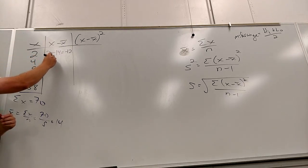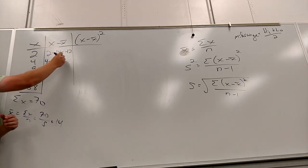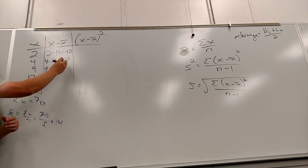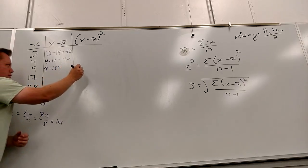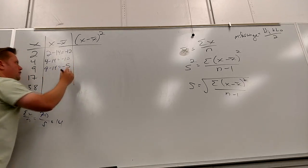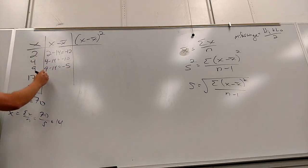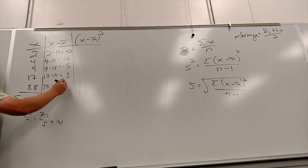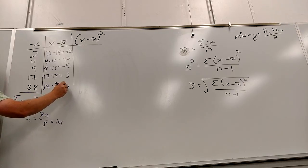4 minus 14 is negative 10. 9 minus 14 is negative 5. 17 minus 14 is 3. 38 minus 14 is 24.